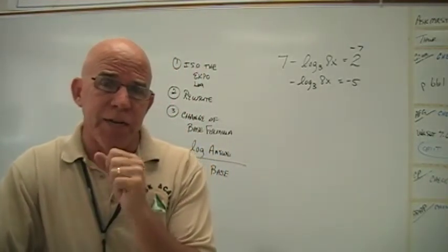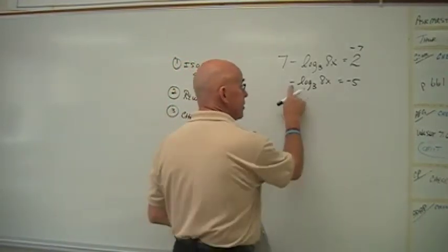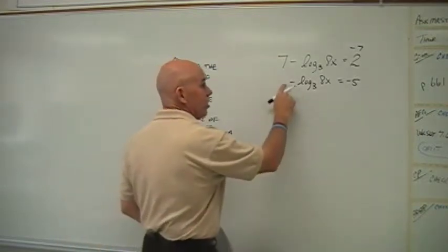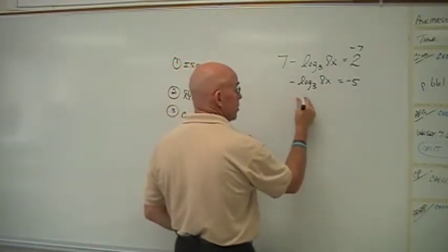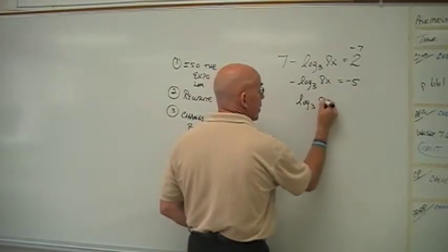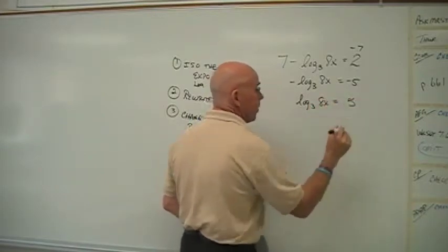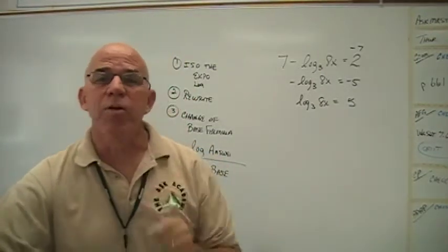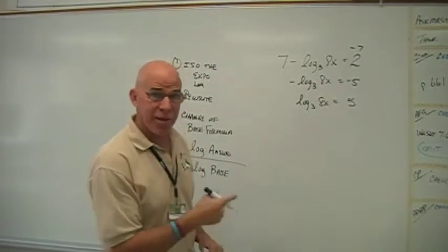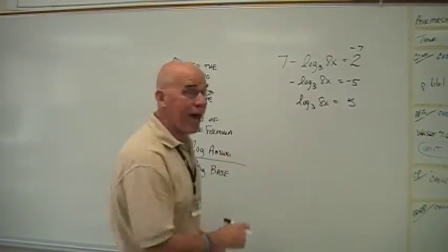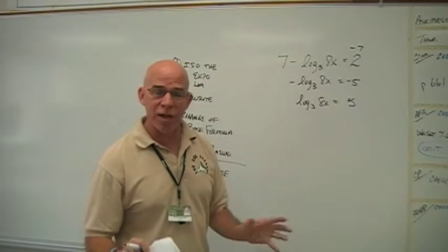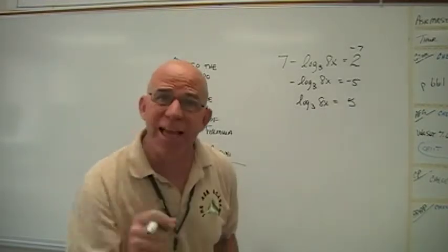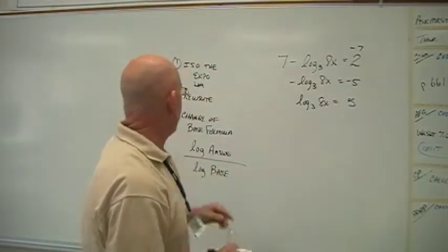So that leaves negative log base 3 of 8x. It's not quite isolated because I have a negative multiplier in front of it. We know that's negative 1. So I can divide by negative 1 or change the signs of both terms. So I'm going to make that positive, and I'm going to make the other thing positive. So now we've got an expression that I can clearly see. What's the base? 3. What's the power? 5. What's the answer? The answer is 8x. So let's rewrite it.